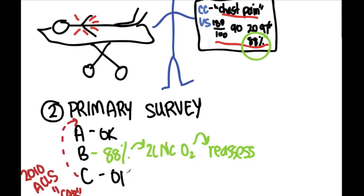So your primary survey is a quick check to see if there's anything that's going to kill your patient in the next few minutes if you don't do something about it. If such a danger does exist, then take care of it. Fix it.